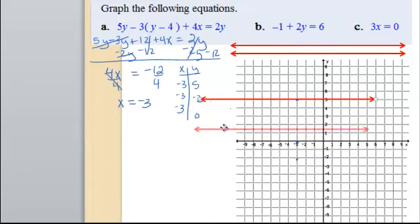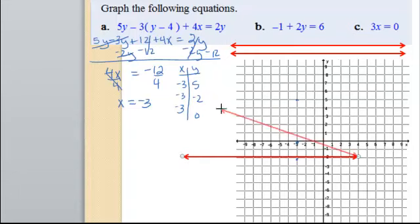There we go. This is the line x equals 3. I should probably label that. This is the line x equals 3.